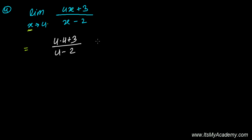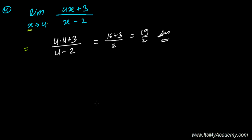So it's going to be 4 times 4, that is 16 plus 3, over 4 minus 2, that's 2. So 19 over 2, and that's our answer. Let's go to the next question. Until then, please subscribe to the channel and hit the like button.